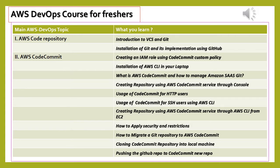Installation of AWS CLI on your laptop: you need to install the AWS CLI on your laptop to use AWS services from the laptop. You will be able to log in with the user ID created with the IAM role. You will learn the AWS Code Commit process and how to manage the AWS SaaS Git for your tasks.